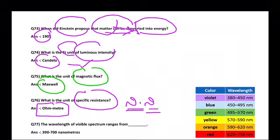Next: The wavelength of visible spectrum ranges from what? The visible spectrum starts from violet at 380 nanometers and ends at red, ranging up to 750 nanometers.